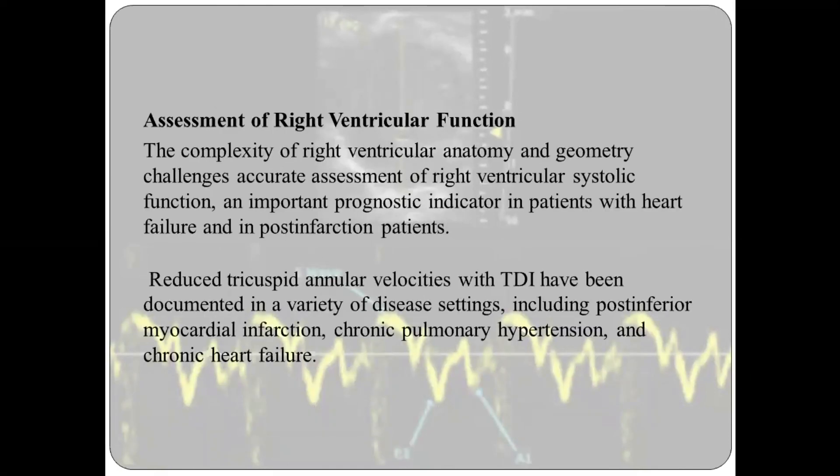Another application is assessment of right ventricular function. Right ventricular anatomy and geometry is complex, making accurate assessment of RV systolic function — an important prognostic marker — challenging. Reduced tricuspid annular velocities with tissue Doppler imaging have been documented in a variety of diseases, including post-inferior myocardial infarction, chronic pulmonary hypertension, and chronic heart failure.